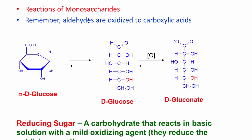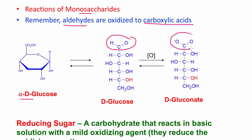Let's look at a few reactions of monosaccharides. Aldehydes are oxidized to carboxylic acids, so D-glucose — in equilibrium with its alpha, beta, and open chain forms — has that aldehyde group in the open chain form that can be oxidized. Oxidizing the aldehyde gives a carboxyl group. In solution, it appears as the gluconate ion.